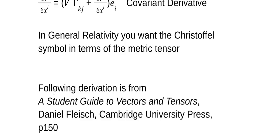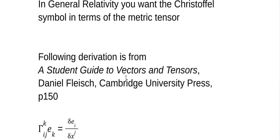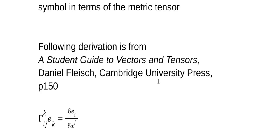So the following derivation of how to get the Christoffel symbol in terms of the metric tensor is straight out of a book: A Student's Guide to Vectors and Tensors by Daniel Fleisch, Cambridge University Press, page 150. So if you have that book, it's right in there. I couldn't do it myself, but now I understand it. Here's our definition of the Christoffel symbol.